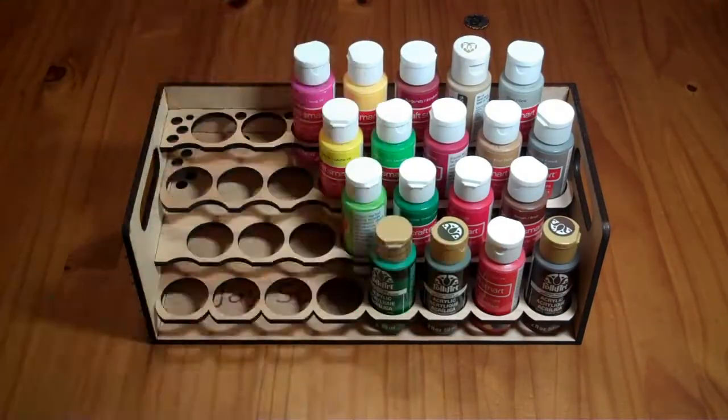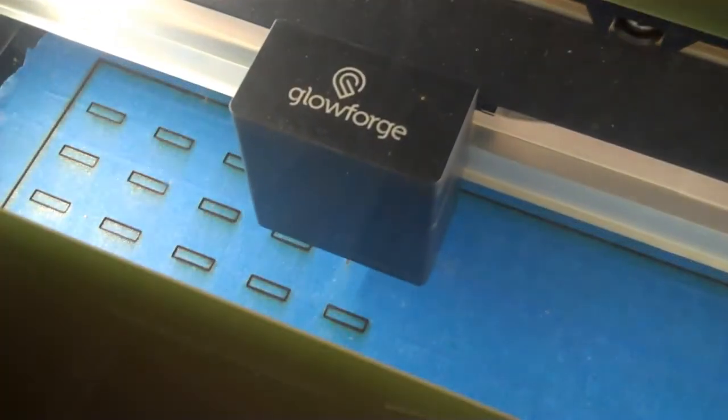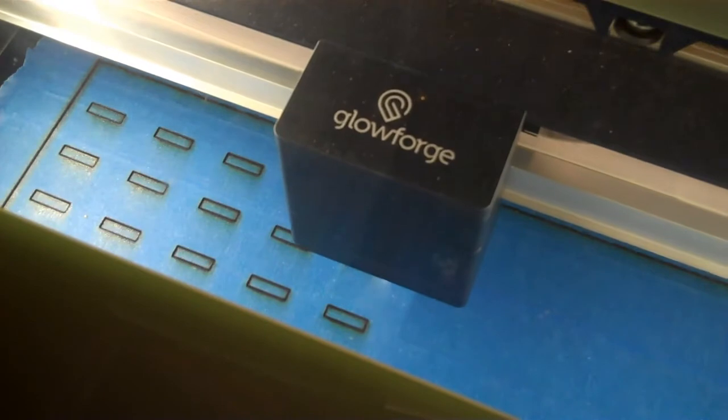I'm going to show you how to assemble the JSummit 2022 paint rack. The plywood is covered with masking tape or protective paper to protect it from smoke generated by the laser.